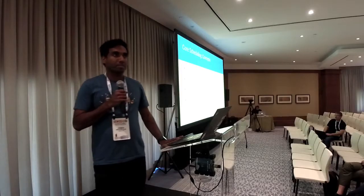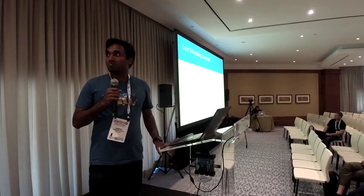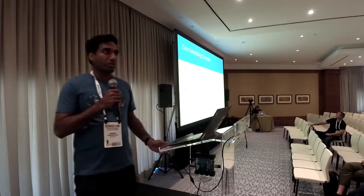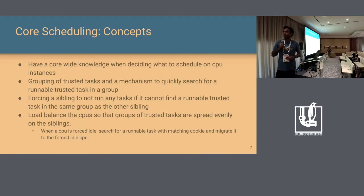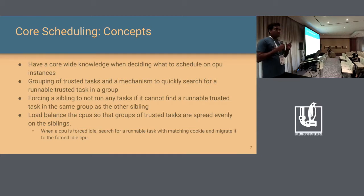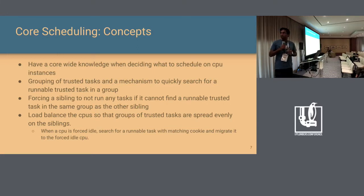Disabling SMT is the safest way to go, and with core scheduling we are trying to achieve a state where we can keep SMT on and make it more secure. The key points are: you need core-wide knowledge when scheduling onto siblings; only trusted processes should execute at the same time on a core; if no match is found, one sibling must be forced idle. Load balancing also applies — if no trusted process can run on one sibling, pull one from elsewhere so you don't waste performance.